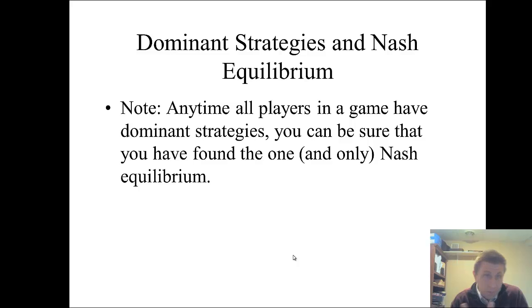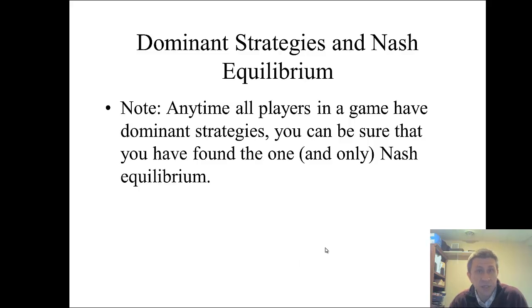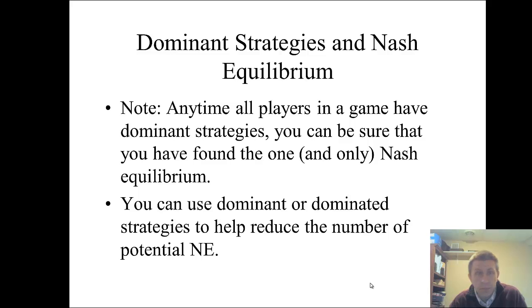How do dominant strategies play in? Anytime all players in a game have strictly dominant strategies, it will point you to the Nash equilibrium — and to the one and only Nash equilibrium. In the prisoner's dilemma, both players have strictly dominant strategies to confess, which points you to the Nash equilibrium of confess-confess. You can also use dominated strategies — sometimes they'll lead you straight to the Nash equilibrium, other times they'll just help eliminate some strategies and reduce the number of outcomes you have to search through.